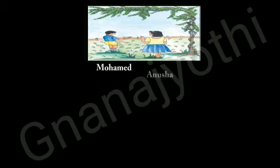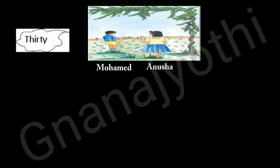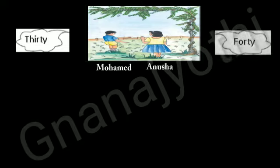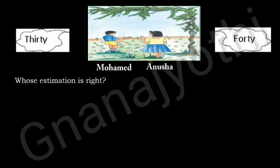Observe the picture students — estimate the number of flowers found below in the jasmine clambers. Mohamed said there are 30 flowers. Anusha said there are 40 flowers. Whose estimation is right? They both started counting the flowers on the ground. After counting, they said totally there are 38 flowers. Therefore, Anusha's estimation is correct because 38 is near to 40.